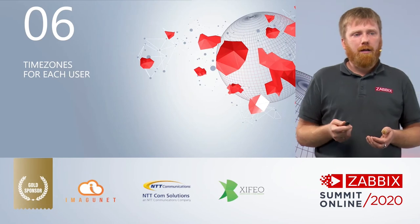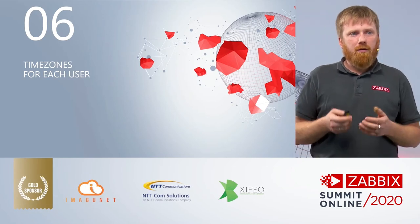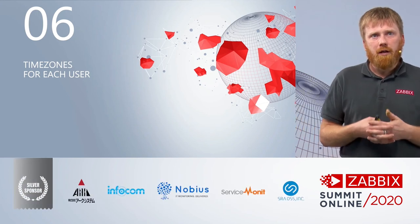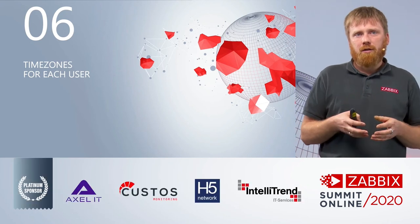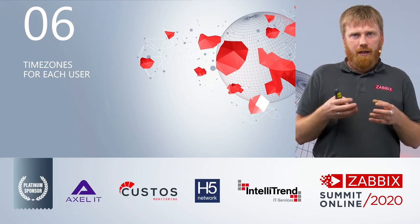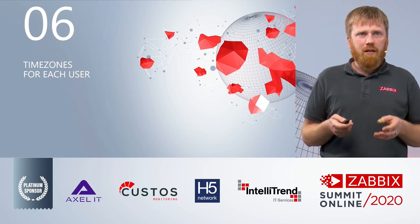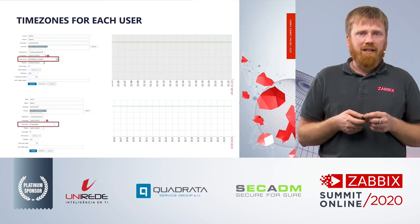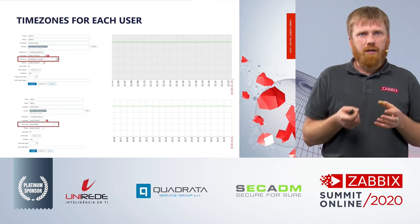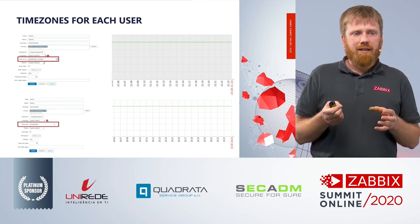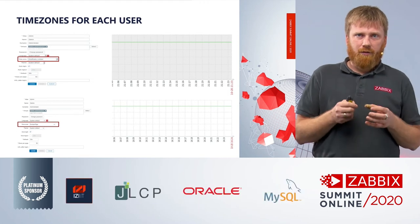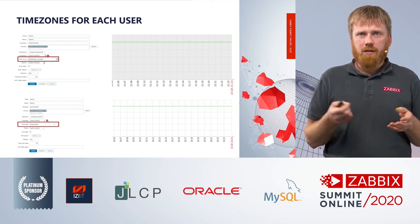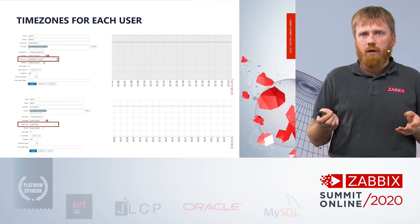Next topic: time zones for each user. A lot of Zabbix users are working in huge multinational companies where parts of the teams are located in different parts of the world and live in different time zones. Previously, it was only possible to set the time zone for the whole web server. Now it is possible to change it for each user. On the screen you can see a result from the same Zabbix installation, the same frontend, only two different users with different time zone settings — for one user it's a bit past nine in the evening, for another it's late afternoon.